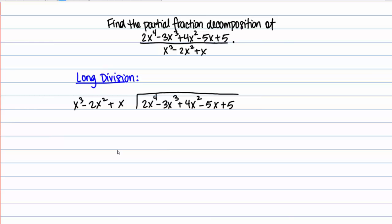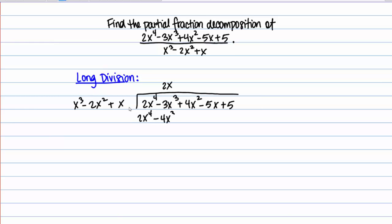So here I've set up our division problem, so let's go through this together. When doing long division of polynomials, I'm going to start by looking at the first term underneath the division sign and the first term outside the division sign. In this particular case, I'm asking myself how many times does x cubed go into 2x to the fourth — in other words, x cubed times blank equals 2x to the fourth. The answer is 2x, so I'm going to put 2x up top. Then I take 2x and multiply it by the whole expression outside the division sign. Distributing, I get 2x to the fourth minus 4x cubed plus 2x squared, and I'm subtracting that entire quantity.